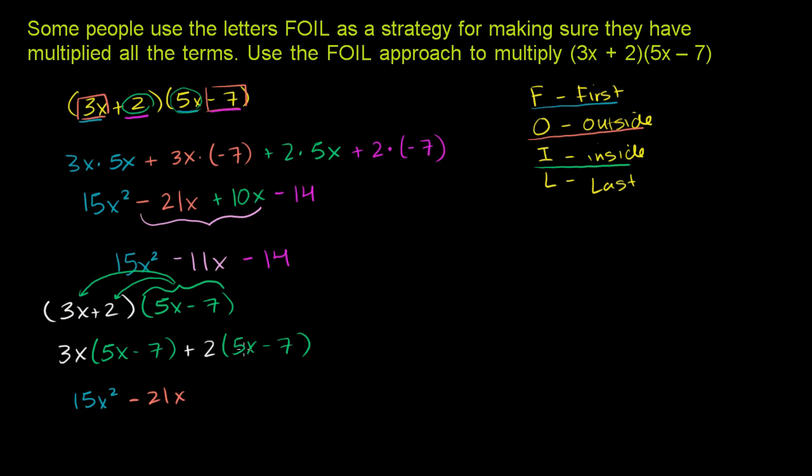So then we have 2 times 5x is going to be 10x, so plus 10x. And then we have 2 times negative 7 is negative 14. So we actually got the exact same result that we did when we applied FOIL. And when you simplify it, you get this answer again.